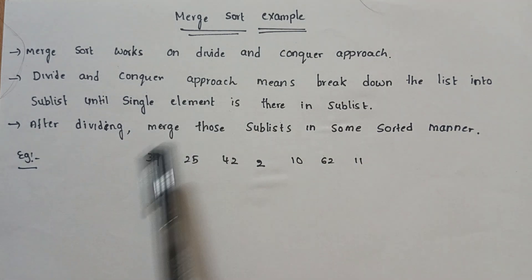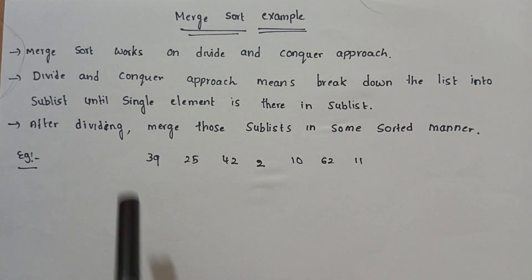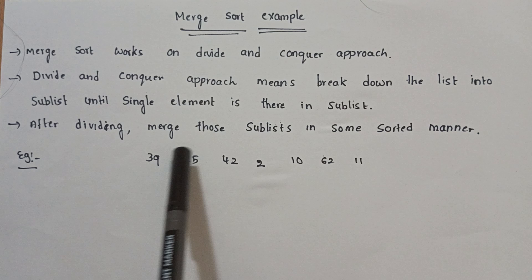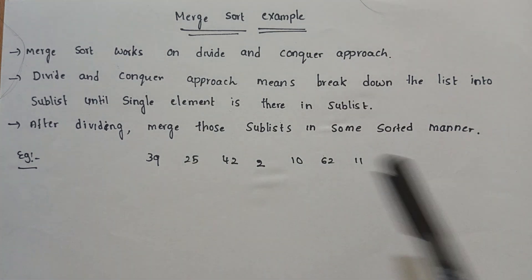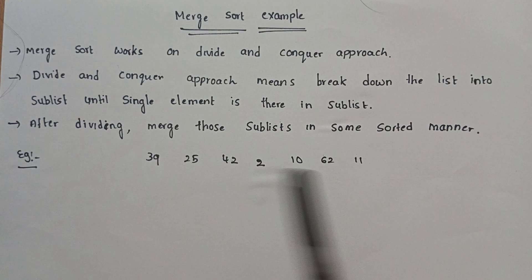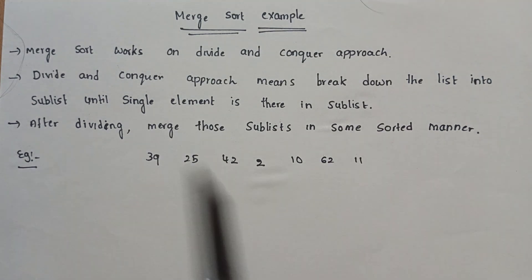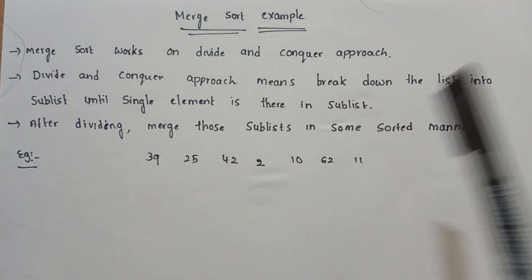After dividing, merge those sublists in some sorted manner. So I am going to divide and divide, then we will combine with a single element. That means divide and conquer.